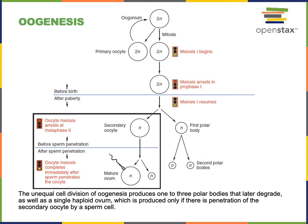The process of oogenesis begins during prenatal development before birth in females, when the oogonium divides by mitosis to produce primary oocytes. These primary oocytes enter into meiosis I but immediately arrest at prophase I. Meiosis I will not be completed until after puberty in response to rising hormone levels, at which point meiosis I resumes to produce a secondary oocyte and a polar body. The polar body is essentially a waste product that removes excess chromosomes, and the secondary oocyte then proceeds to meiosis II.